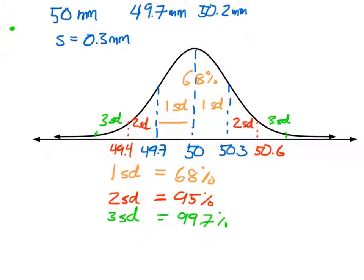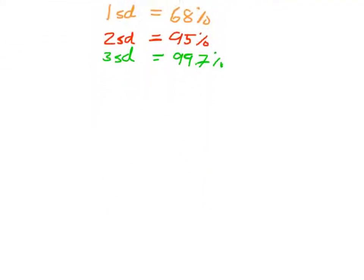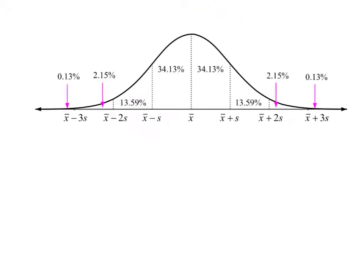Let's take a look at a more generalized version of this graph for the normal distribution. Here we have our bell-shaped curve with the mean in the center, the mean plus one standard deviation to the right, and the mean minus one standard deviation to the left. Roughly 68 percent of the data falls within one standard deviation of the mean, and we can extend this to two and three standard deviations.